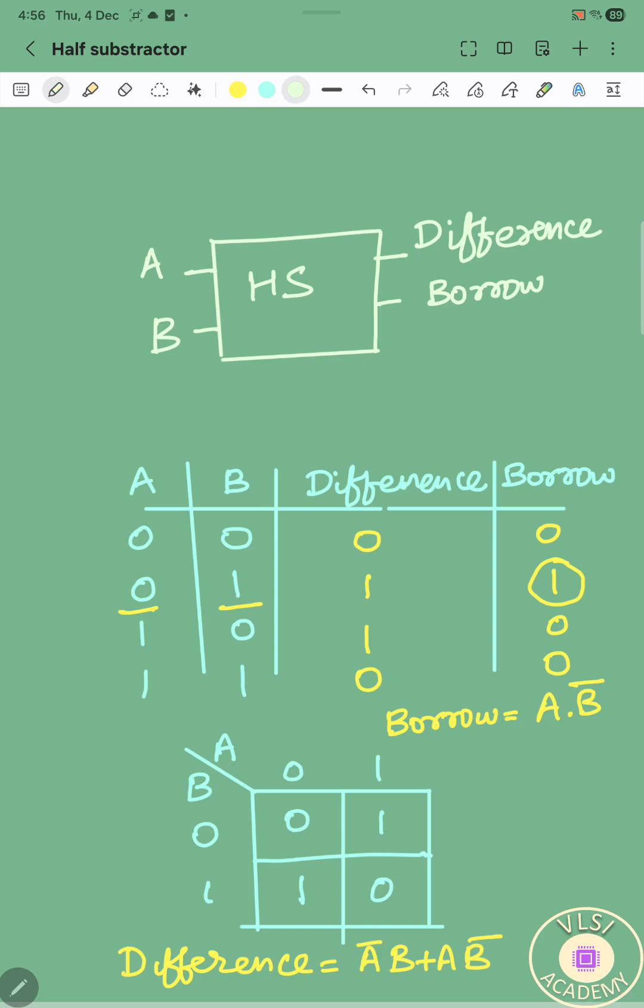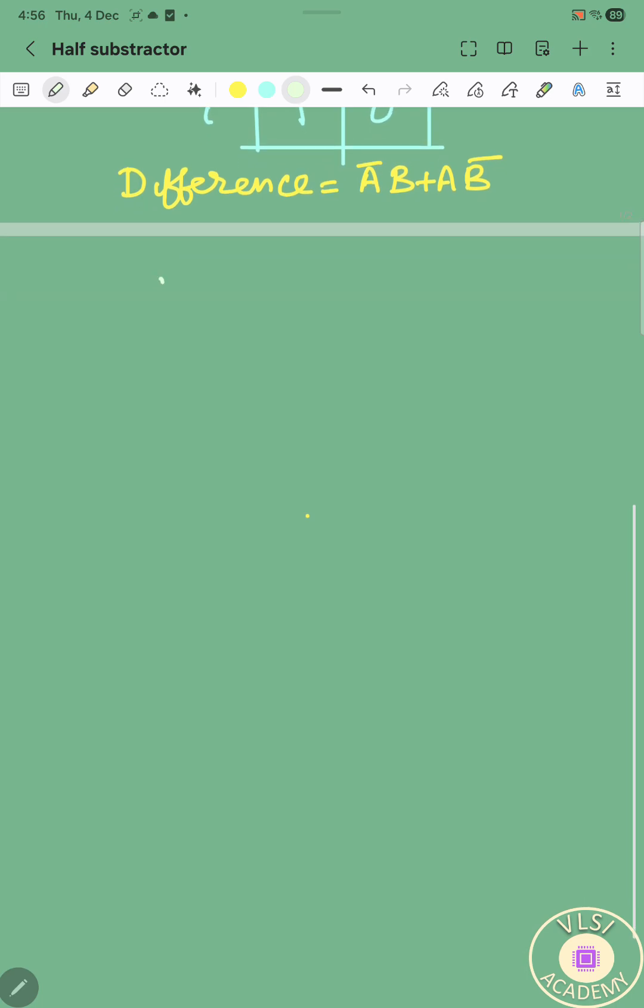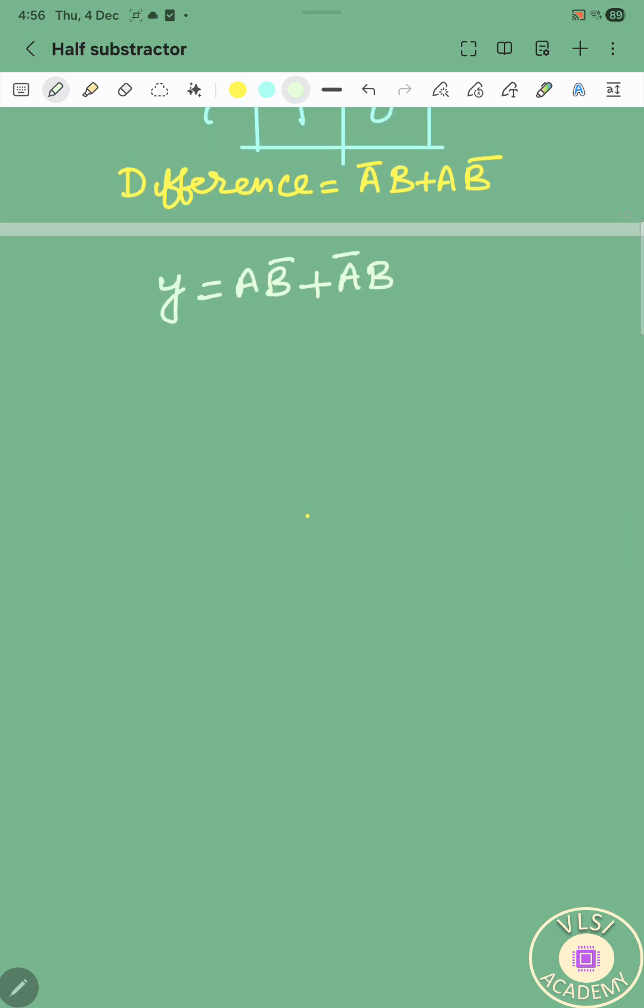We could have made one K-map for borrow output also, but it is not really needed since borrow output can be directly represented in terms of input as A bar B. Now we know difference output is A bar B plus A B bar.